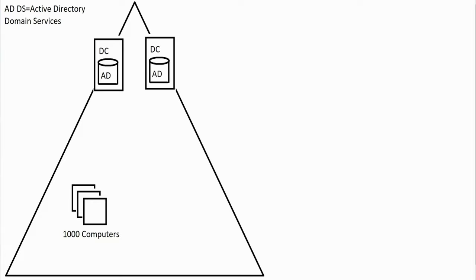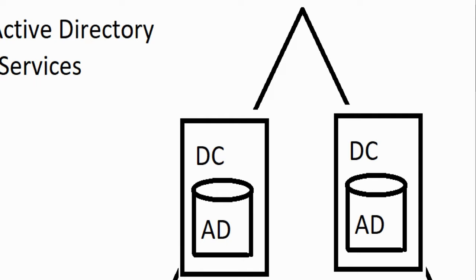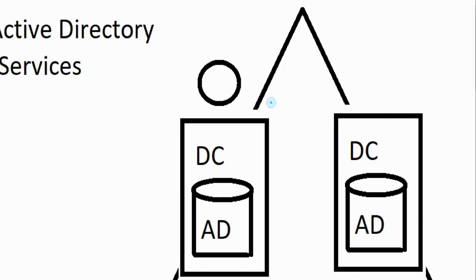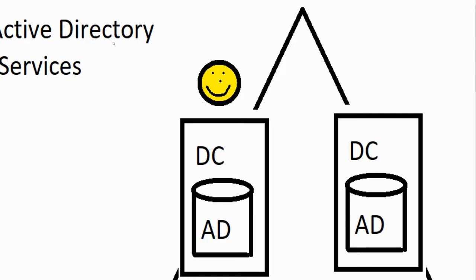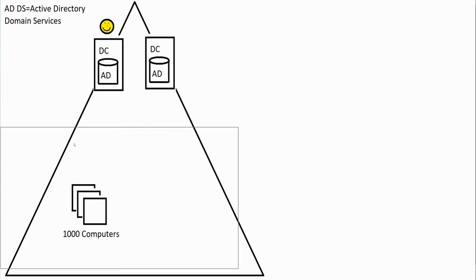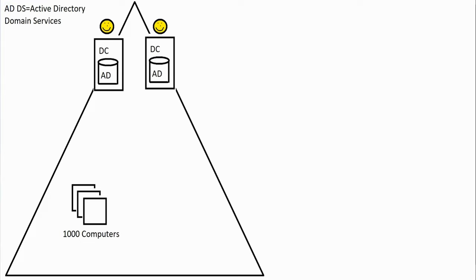Domain controllers replicate — everything you do on one will replicate over to the other. So if you create a user account on the first one, replication occurs between both of them. That means a user could log on to any machine and authenticate with whichever domain controller is available.